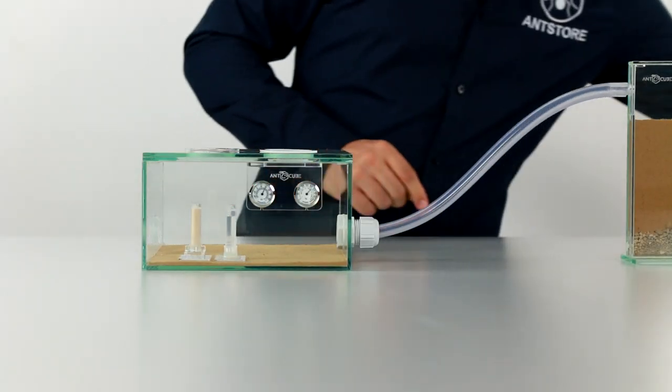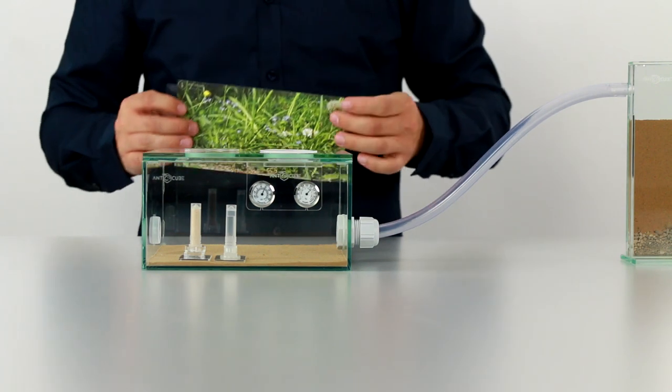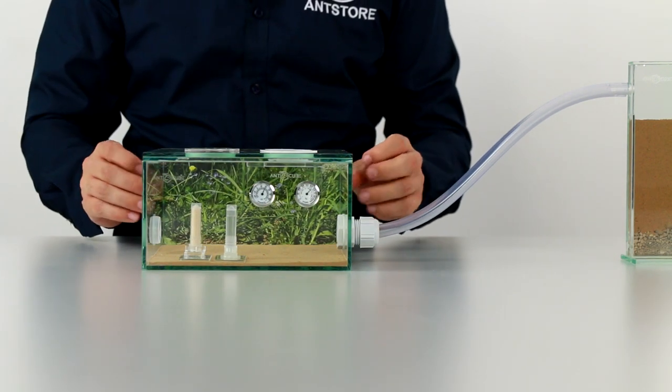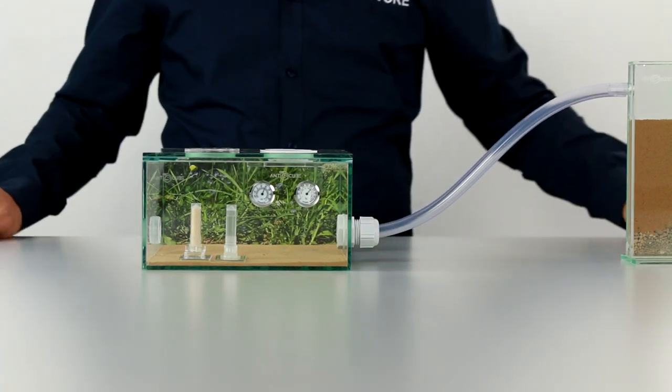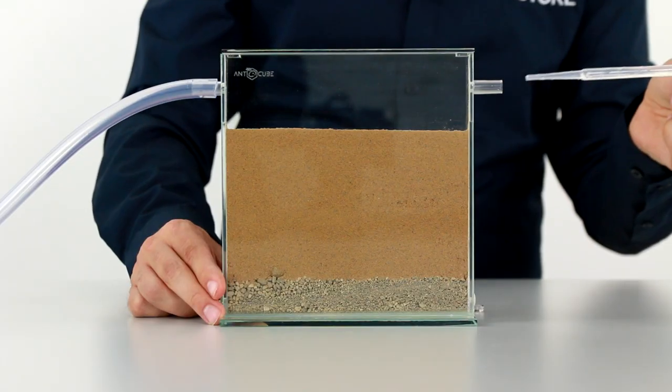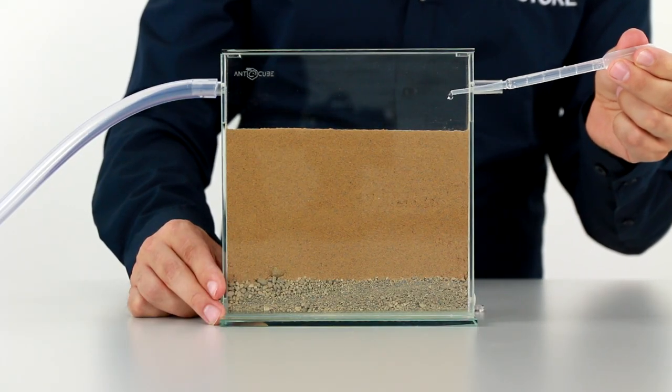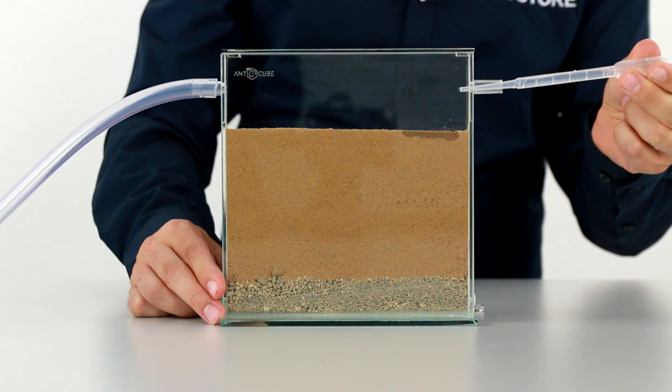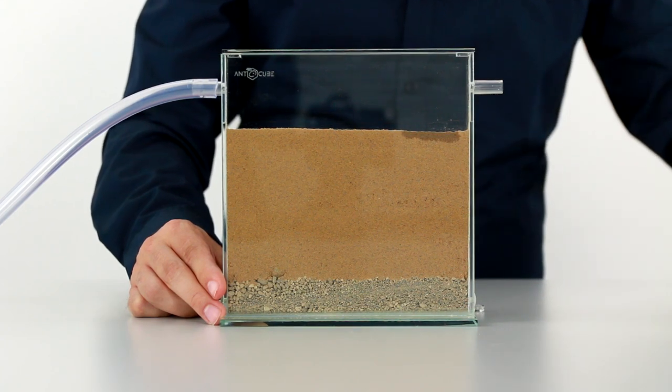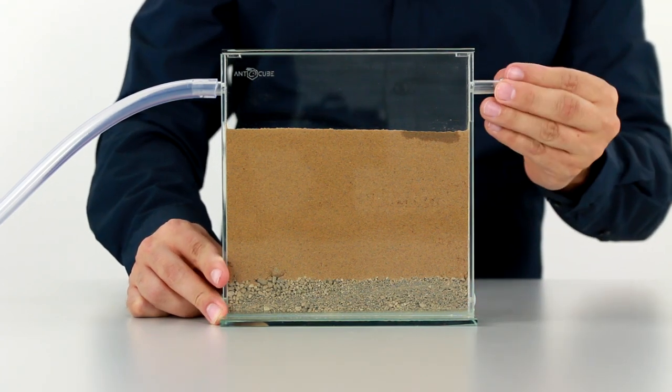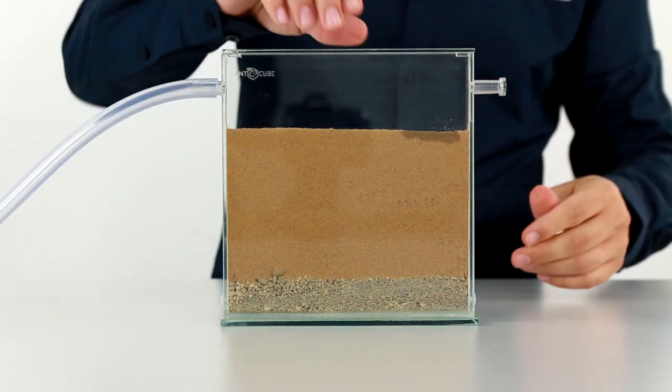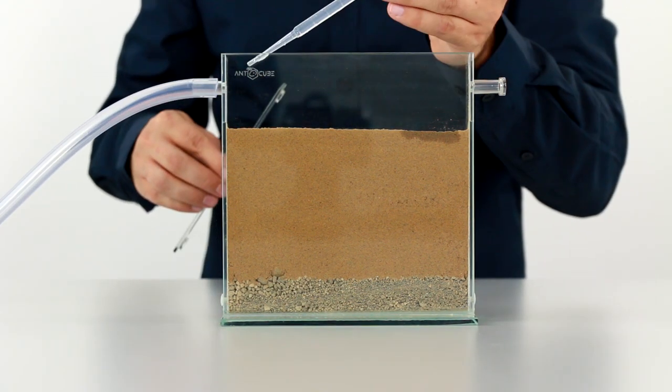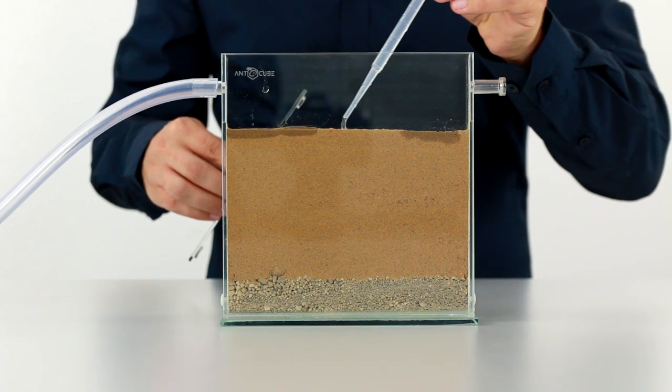As our final step here we have a matching photo background for the arena. This is available with meadow, forest, desert, or rainforest motif. Before we put the animals in we moisten the farm. To do this we remove the side cap and add a few drops of water with the pipette. For the first filling without animals you can also remove the farm lid and moisten from above.